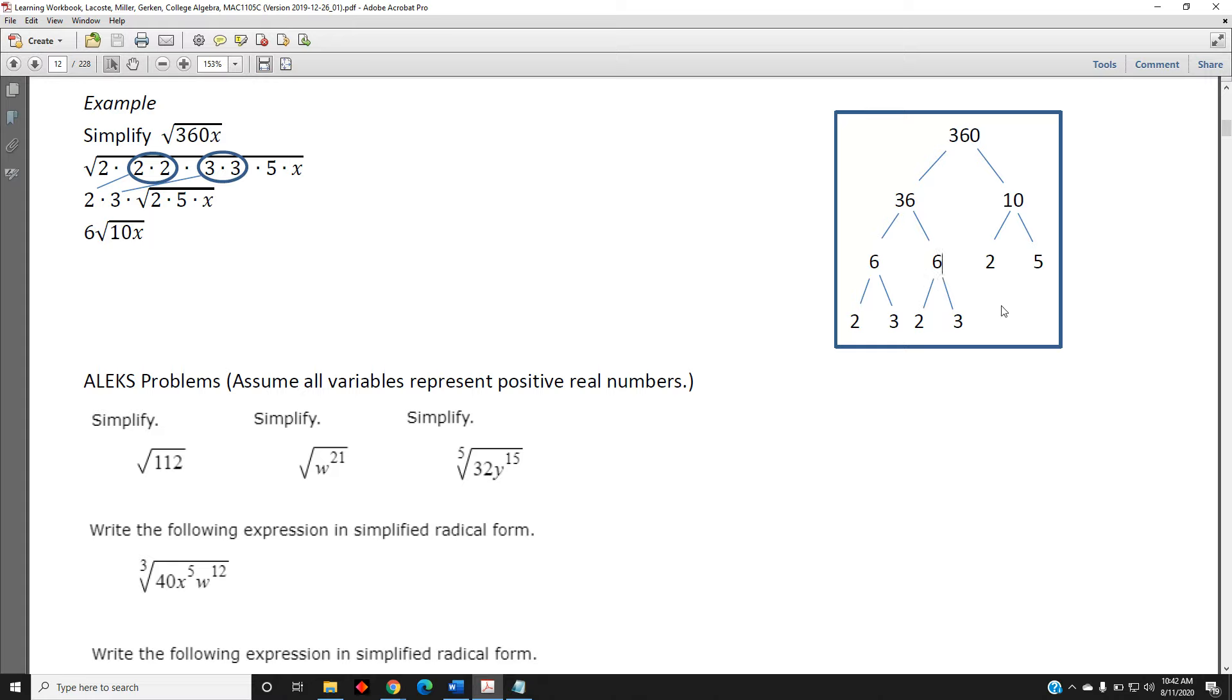So at the end of each of the branches of our tree, we now have prime numbers: 2, 3, 2, 3, 2, 5. These are the only numbers we need to write our prime factorization.